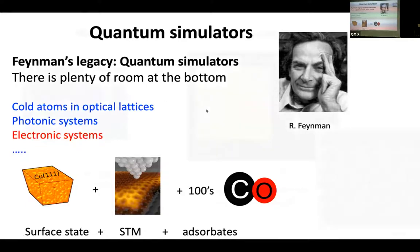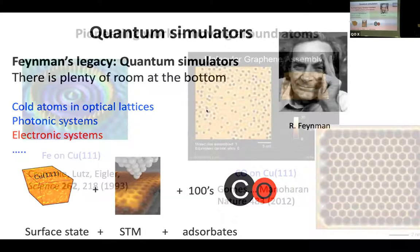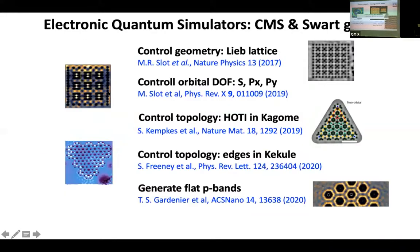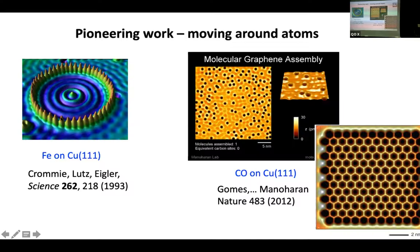So this type of simulators started actually in 1993 with the work in the group of Don Eigler in Almaden, when he took the surface of copper 111. It's basically like a two-dimensional electron gas. And he was patterning a quantum corral. So here you see these spikes are the separation between the iron atoms. It is in the nanometer scale. And these beautiful waves that you see here are the electronic waves.